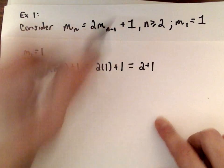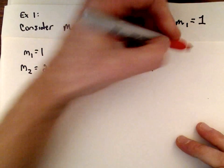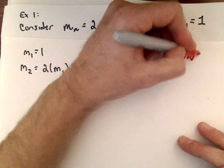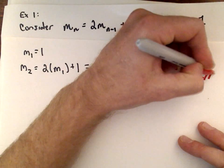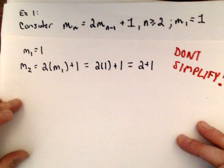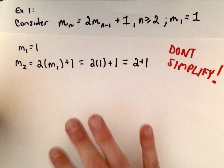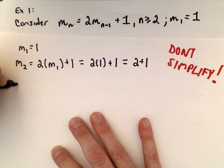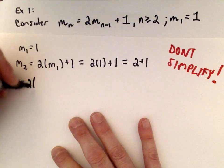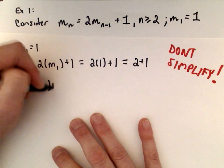But I'm going to write this as 2 plus 1. This is important: often times you don't simplify. If you simplify, you're not going to spot the pattern.